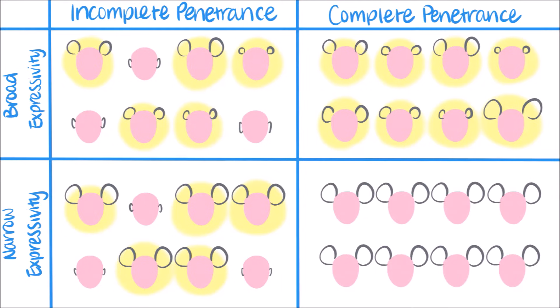And finally, complete penetrance and narrow expressivity. Everybody who has the mouse ear genetic mutation has the mouse ear phenotype, and the phenotype is expressed to about the same degree in everyone.